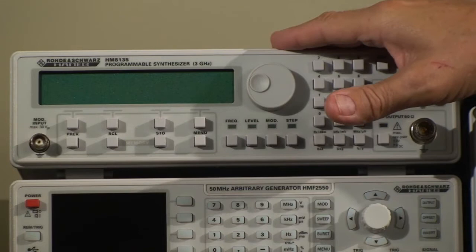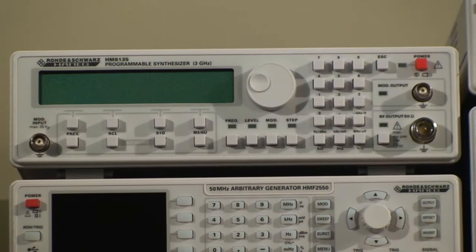Here we have the Hameg HM8135 RF synthesizer. It's a one kilohertz to three gigahertz RF synthesizer. It covers the power level of minus 135 dBm up to plus 13.